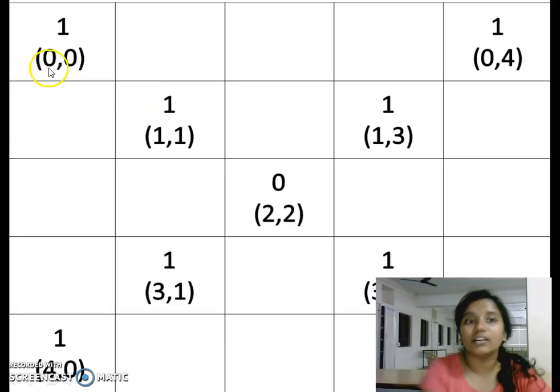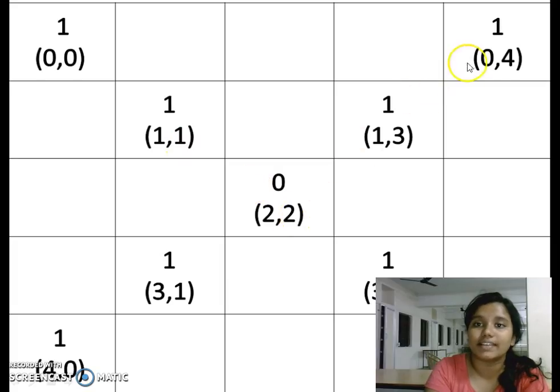And now, here 0 comma 0 means the 0th row, 0th column according to the computer. But for us, it is the first row, first column. This is the way I have filled all these blocks and all these address locations that have been given for the numbers which are present over here.